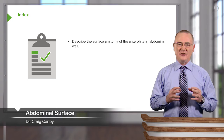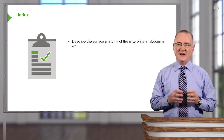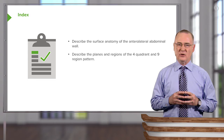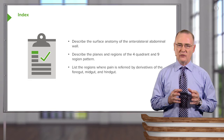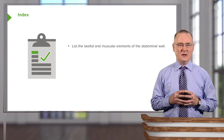First, describe the surface anatomy of the anterolateral abdominal wall. Describe the planes and regions of the four-quadrant and nine-region pattern. List the regions where pain is referred by derivatives of the foregut, midgut, and hindgut. List the skeletal and muscular elements of the abdominal wall.